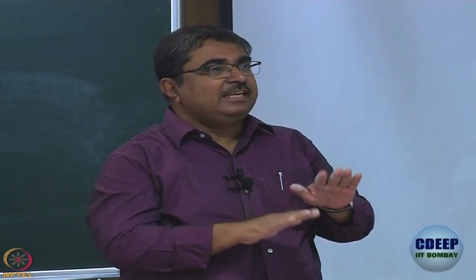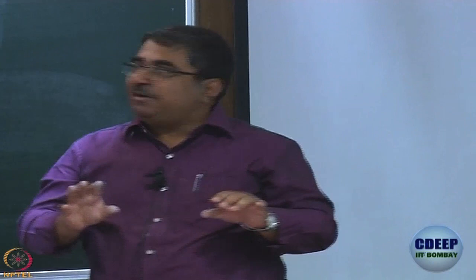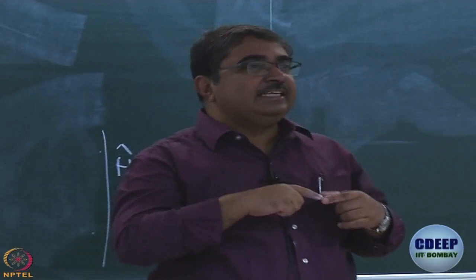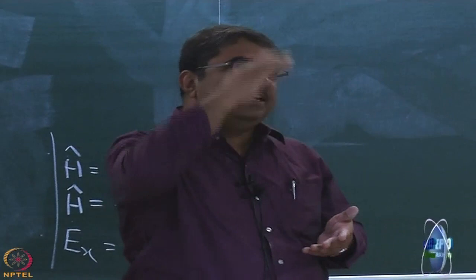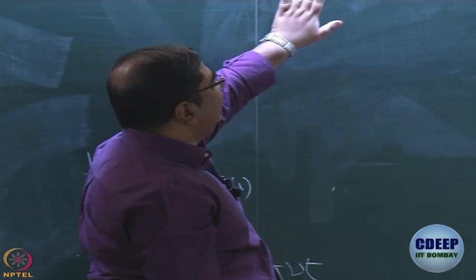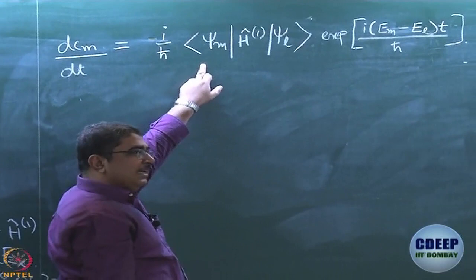We are working with the understanding that ψL has lower energy and ψM has higher energy, but it can be the other way around — it does not matter. We have written the wave function of the perturbed system as a linear sum of two wave functions, where Cm is the coefficient of the state that is not populated at time zero. So if you are talking about absorption spectroscopy, it is the higher state. We derived that dCm/dt equals –i/ħ times an integral over space multiplied by an exponential factor in time.